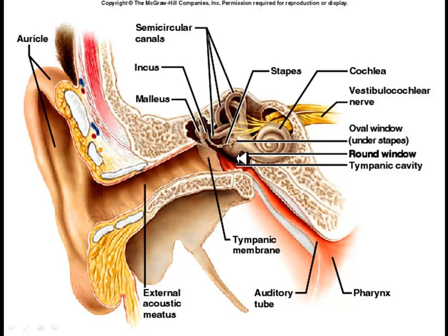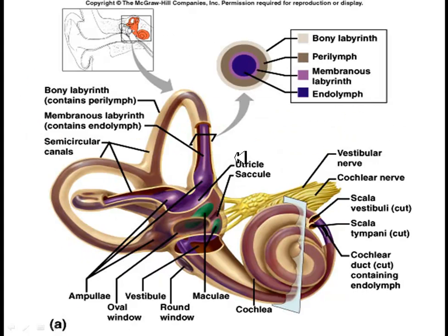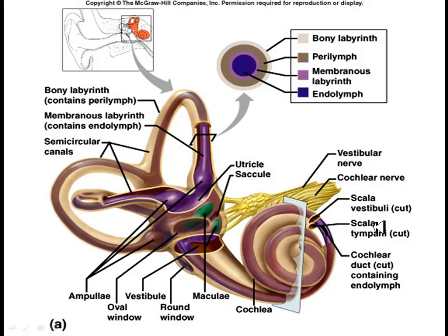The auditory or Eustachian tube connects to the throat, which is why tubes are sometimes placed in the ear to help prevent inner ear infections. Taking a closer look at the cochlea: if you were to cut the semicircular canal in half, you would have the bony labyrinth, the perilymph, the membranous labyrinth, and then the endolymph — two types of fluid. If you cut a cross-section slice of the cochlea, you'll see the scala vestibuli and scala tympani, both filled with perilymph, and hearing actually occurs between those two.